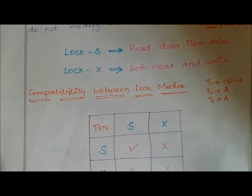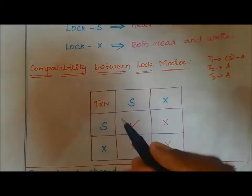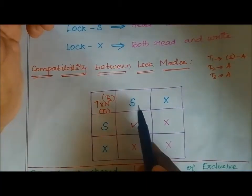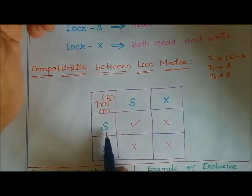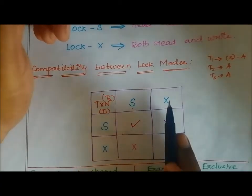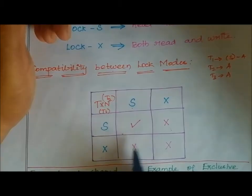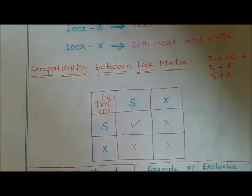Now let's see the compatibility between lock modes — shared lock and exclusive lock. If transaction T1 holds a shared lock, transaction T2 can also access that particular data item with a shared lock. But if one transaction holds an exclusive lock on a data item, no other transaction can access that data item at the same time.